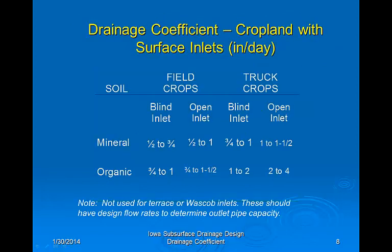For landscapes such as North Central Iowa where intakes are included in the drainage system to remove surface water, we need to increase the drainage coefficient to account for this undetermined amount of surface water. Note that these values are not used when designing terraces, wash basins, or other situations where the required drainage rate is determined during a design process.